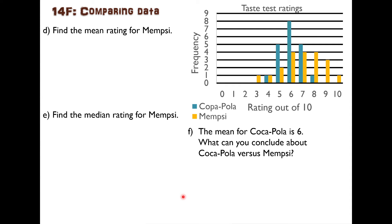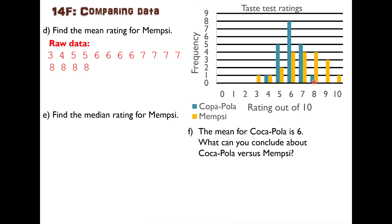We can also find the mean to compare the two brands. To find the mean rating for Mempsi, we need to add up all the ratings people gave. The easiest way is to list the raw data. One person gave a three, one gave a four, two people gave a five, four people gave a six, four people gave a seven, four people gave an eight, three people gave a nine, and one person gave a ten. From the column graph we can recover all of the original raw data.